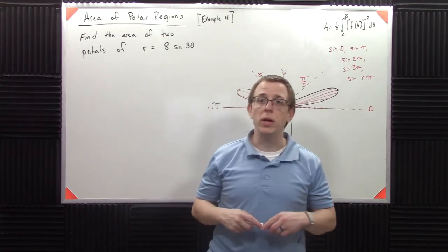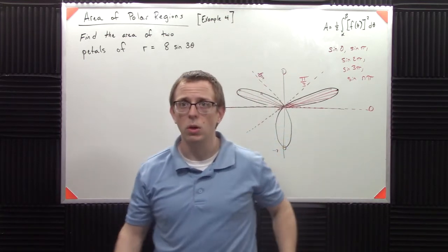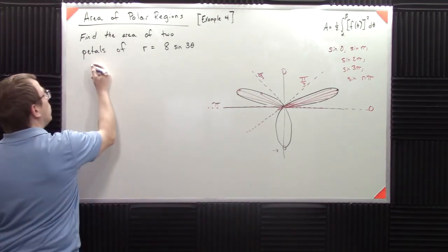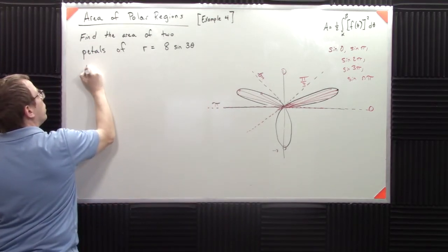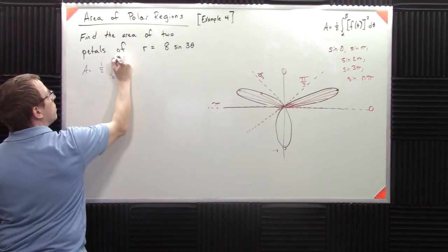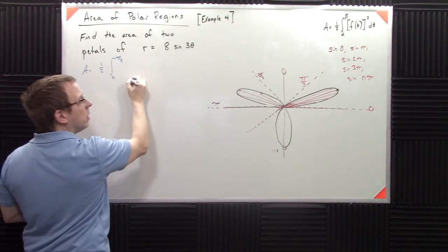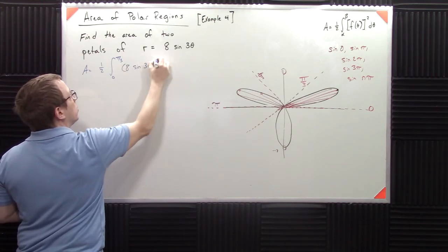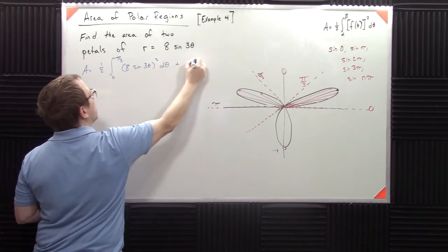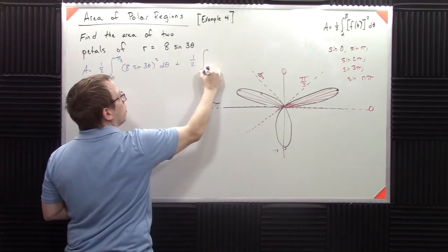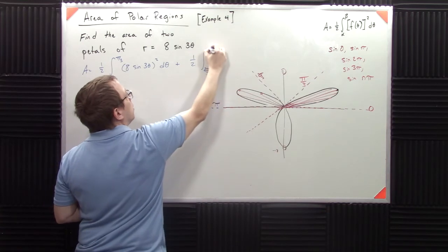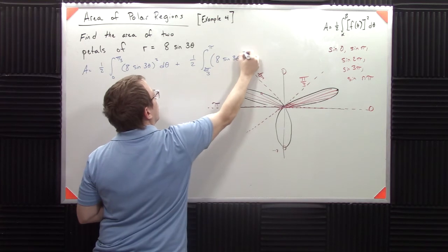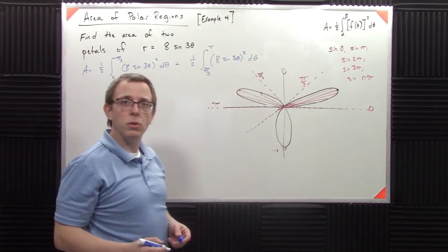So there's two ways to set this up. We can set this up as two separate integrals. We can say the integral, we can say the area is one half zero to pi over three of eight sine three theta squared d theta plus one half the integral from two pi over three to pi. That's a perfectly fine way to do that.